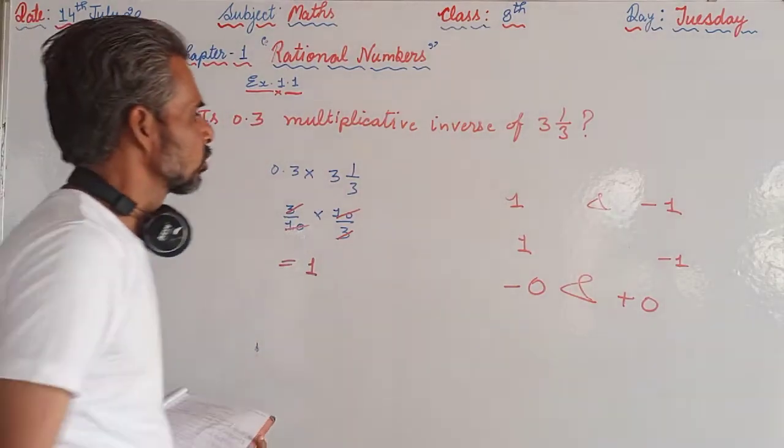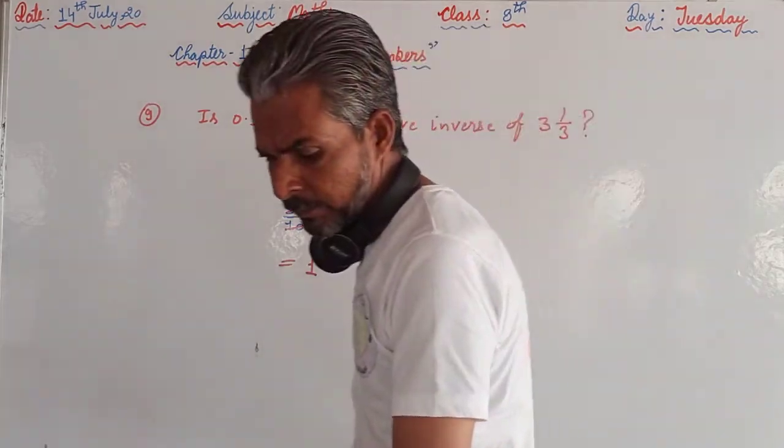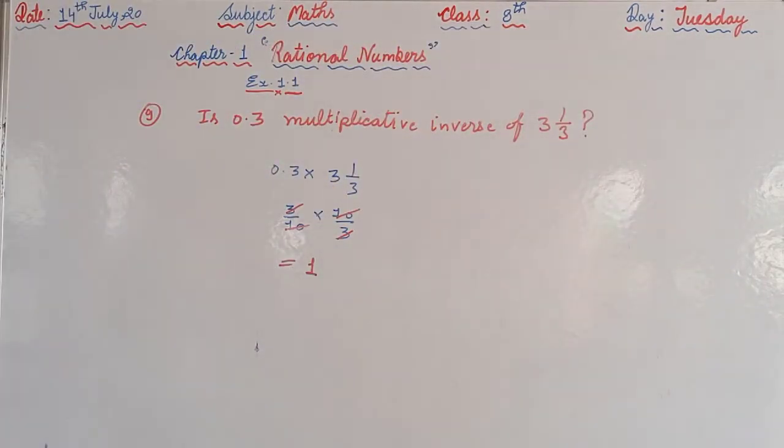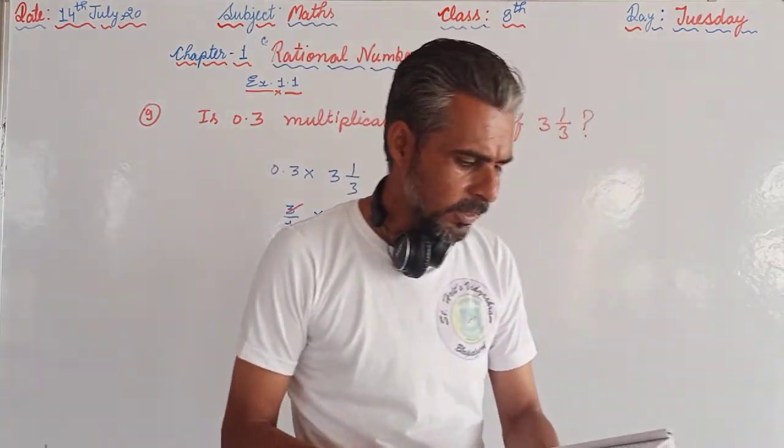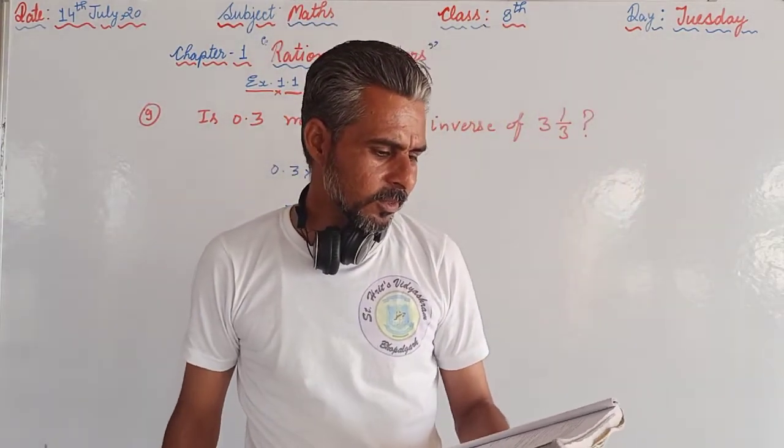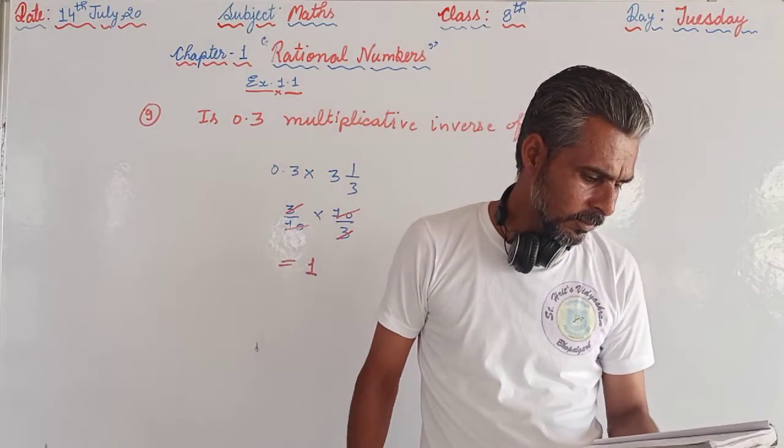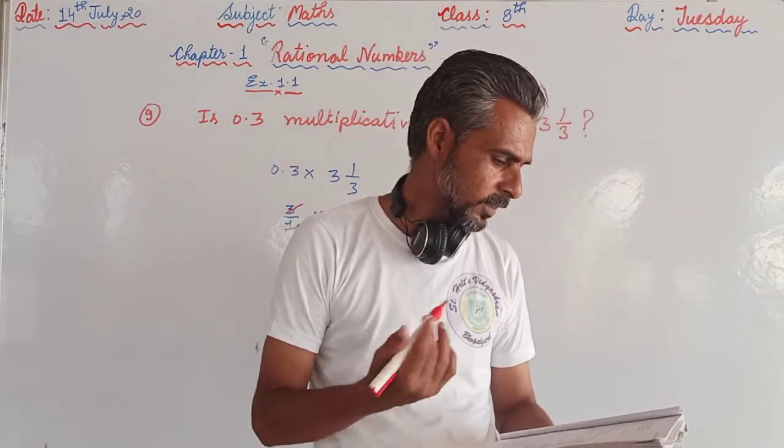At the same time, question number 11: fill in the blanks. 0 has no reciprocal. We have just discussed that 0 has no reciprocals. The numbers 1 and minus 1 are their own reciprocals. We just discussed this.